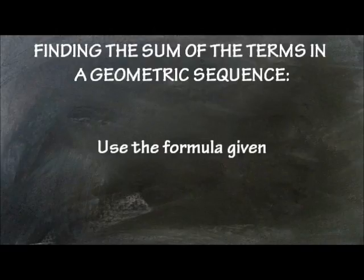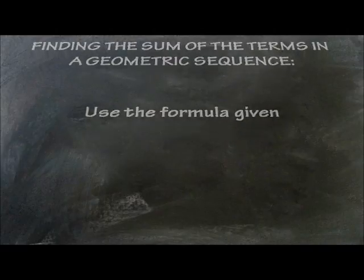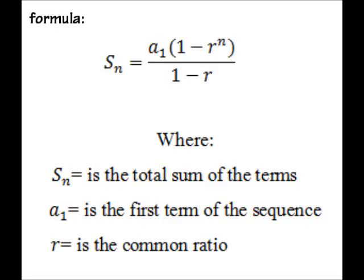To find the sum of the terms in a geometric sequence, a formula is used. S sub n equals a sub 1 times quantity 1 minus r raised to n all over 1 minus r.